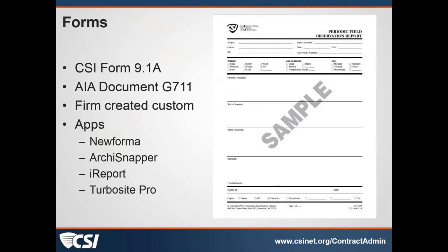Drusilla Brookshire pointed out the wording on the last slide looks to have come from the 1997 version of the 201. However, the 2007 version states a fairly large difference that Drusilla points out might be an indication that AIA realized some of the problem related to the previous statement and has tried to correct it. You may want to look into that and see which version you're using and what language might be appropriate. She is correct — the language on that last slide was from the 1997 B-201.